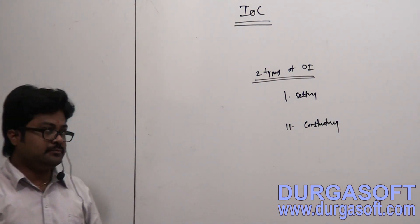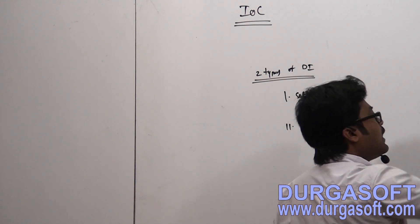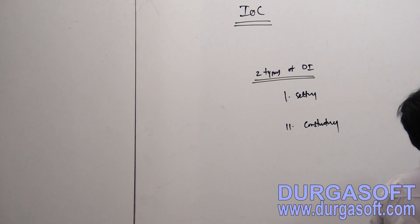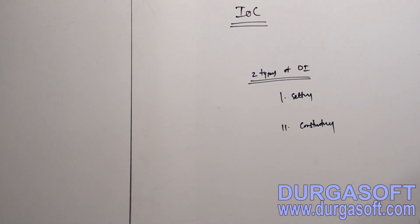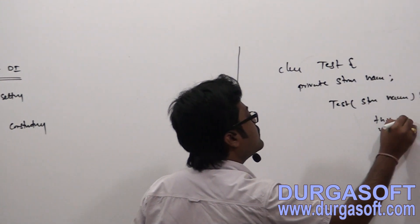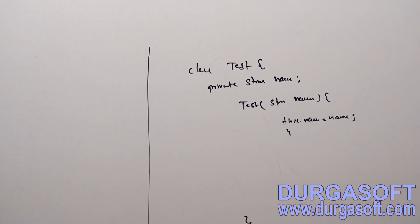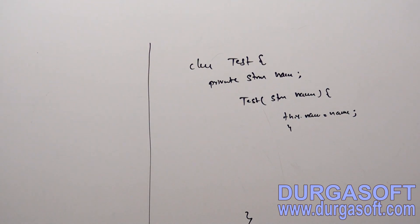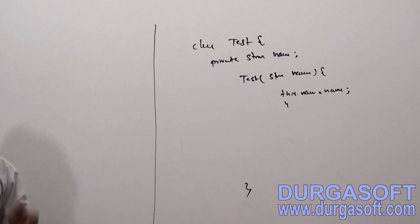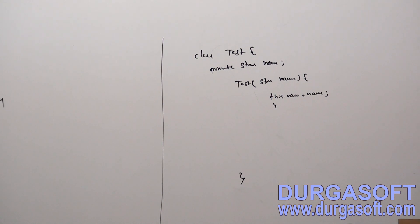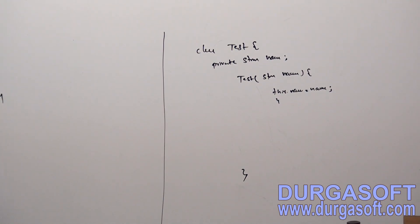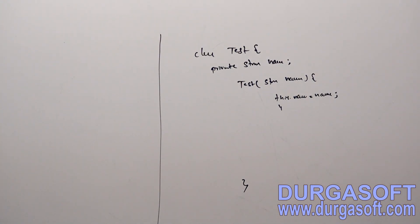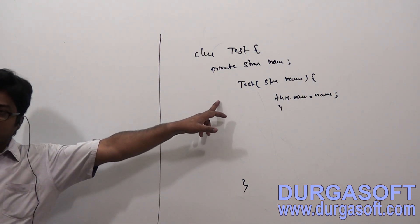Using a parameterized constructor, we can do dependency injection if the class has only one single parameterized constructor. Without calling that constructor, it is not possible to create the class object. So in case of constructor dependency injection, injecting properties is mandatory. If you pass parameters, then only it will find the parameterized constructor in your class and create the object.